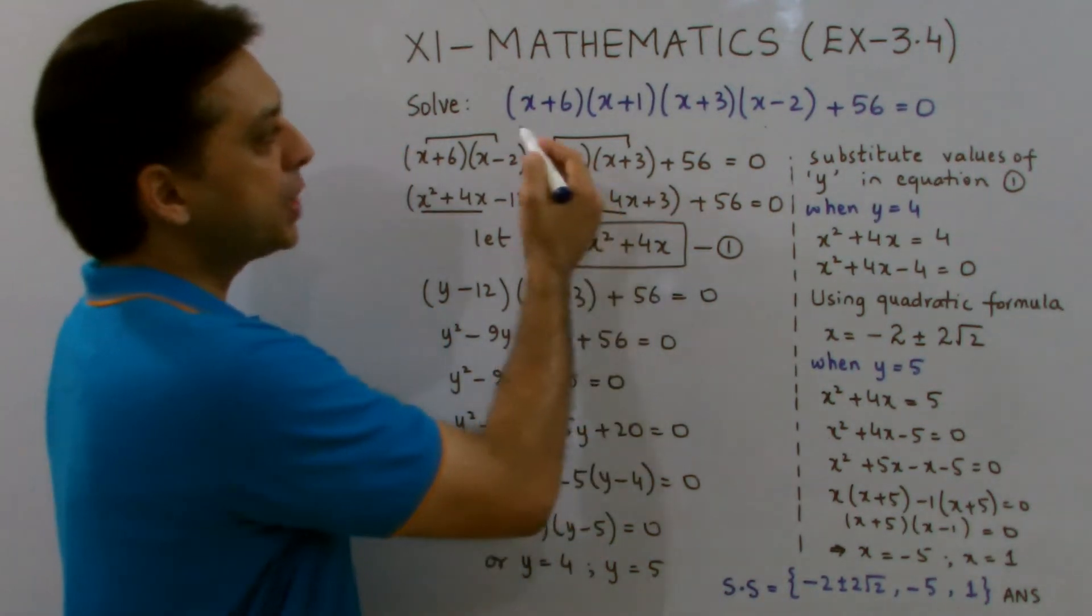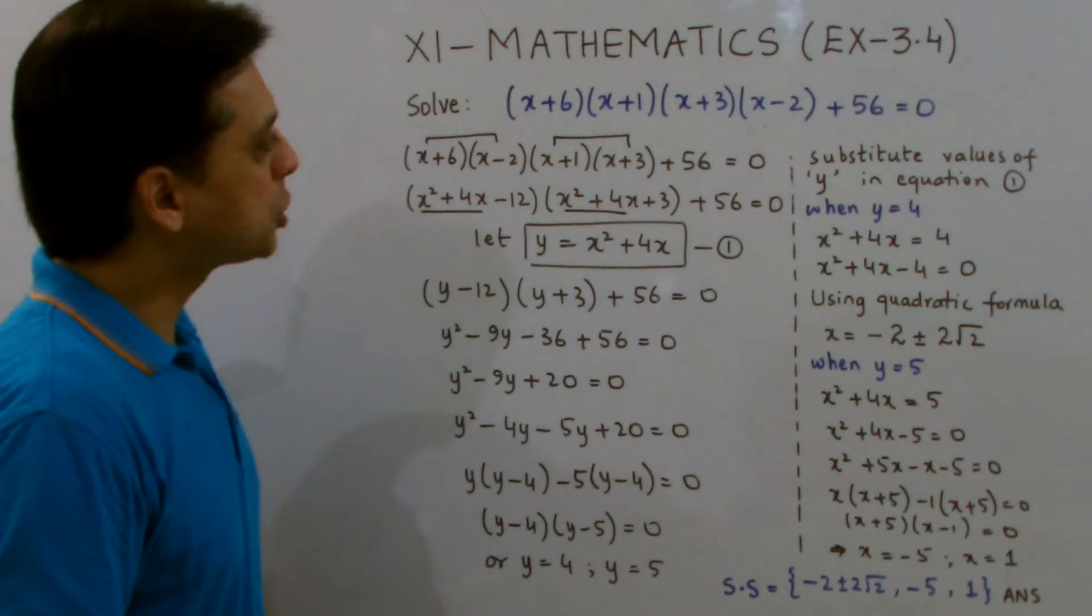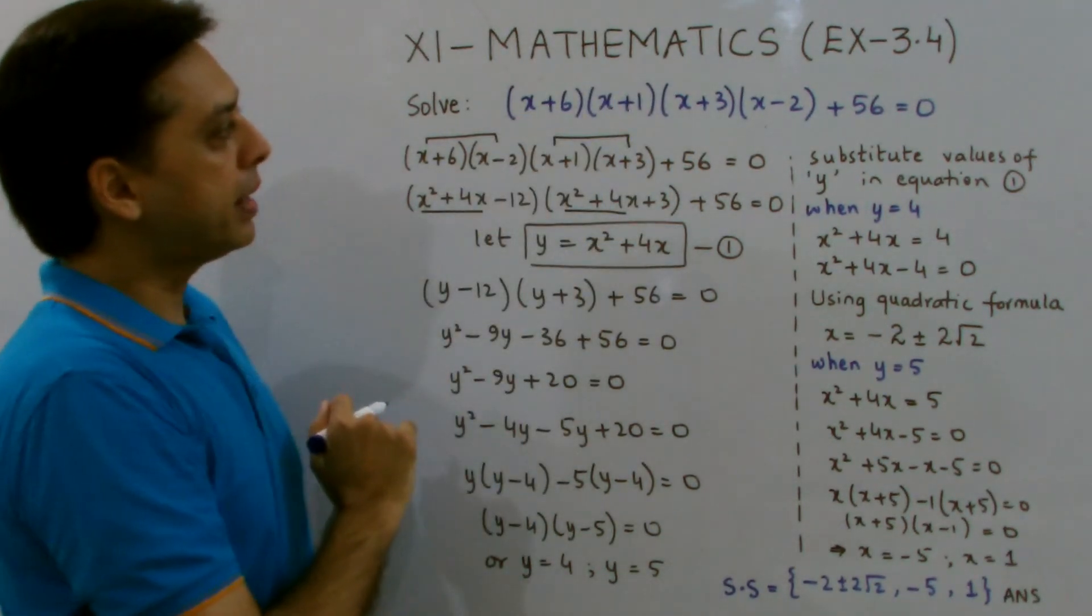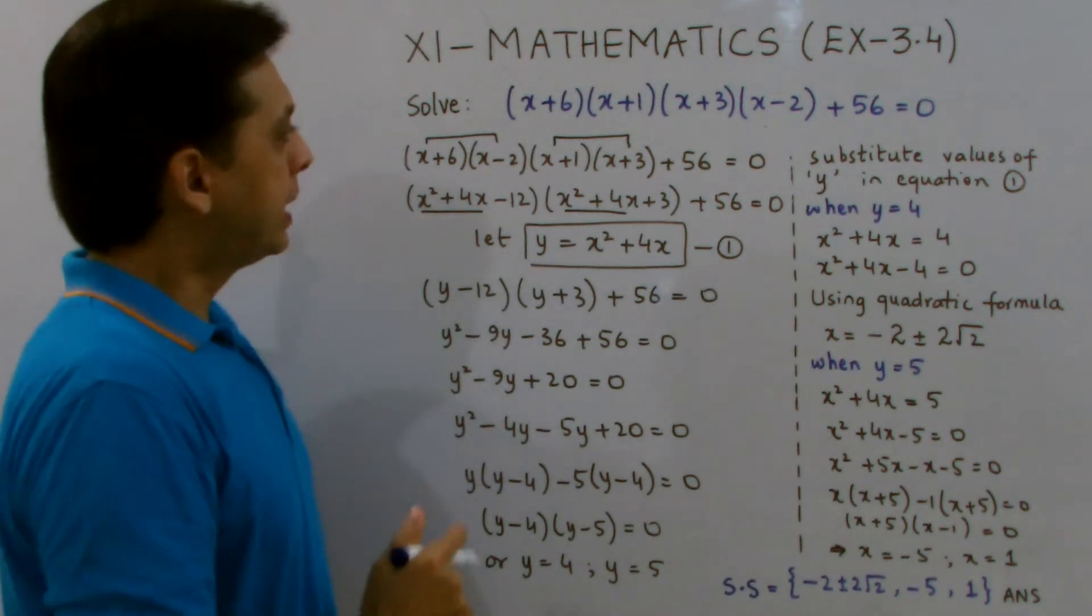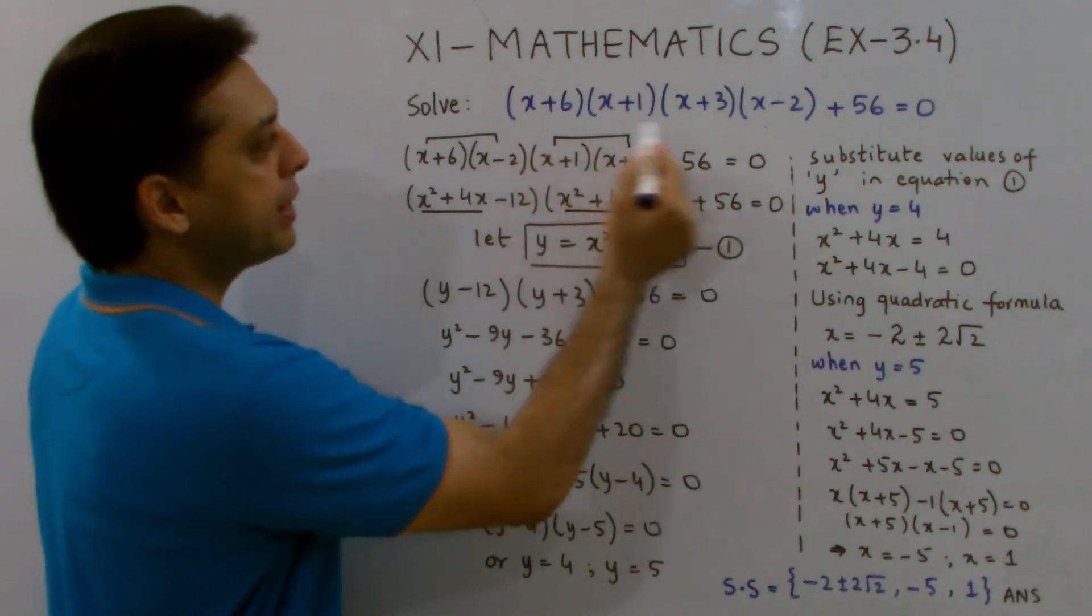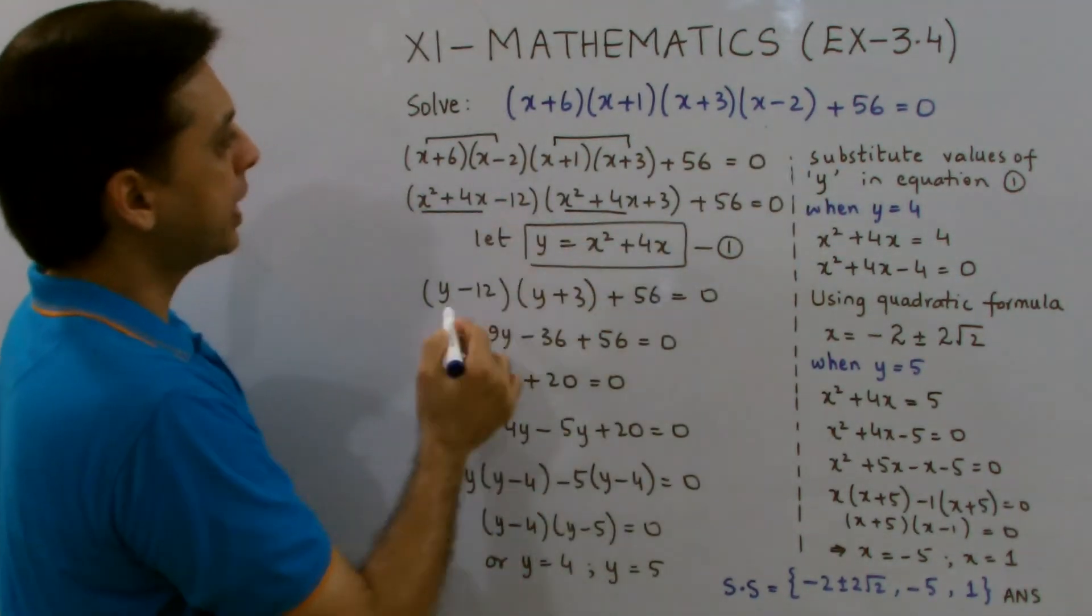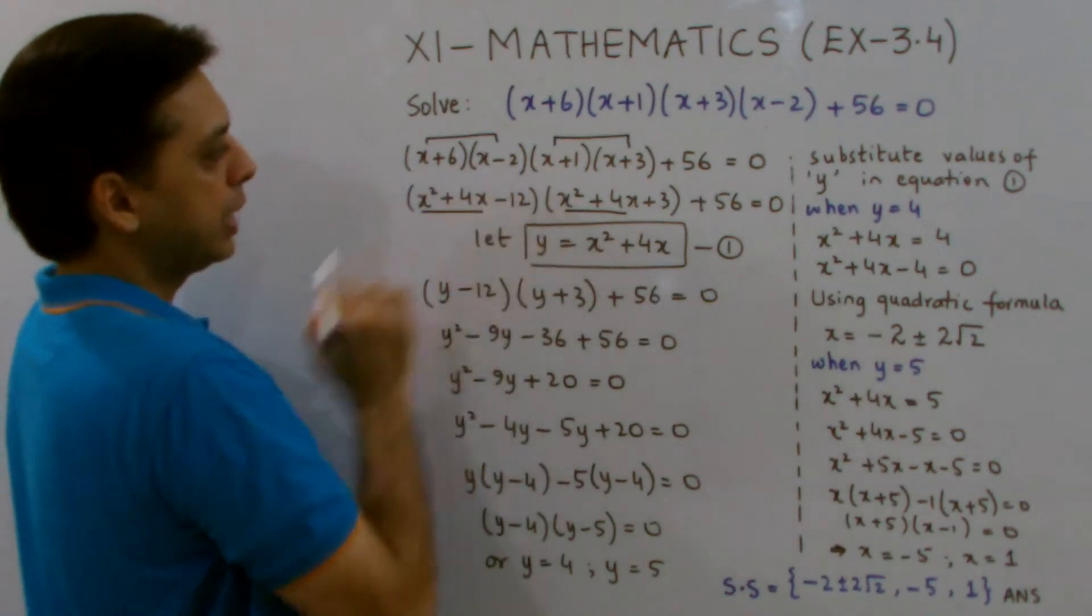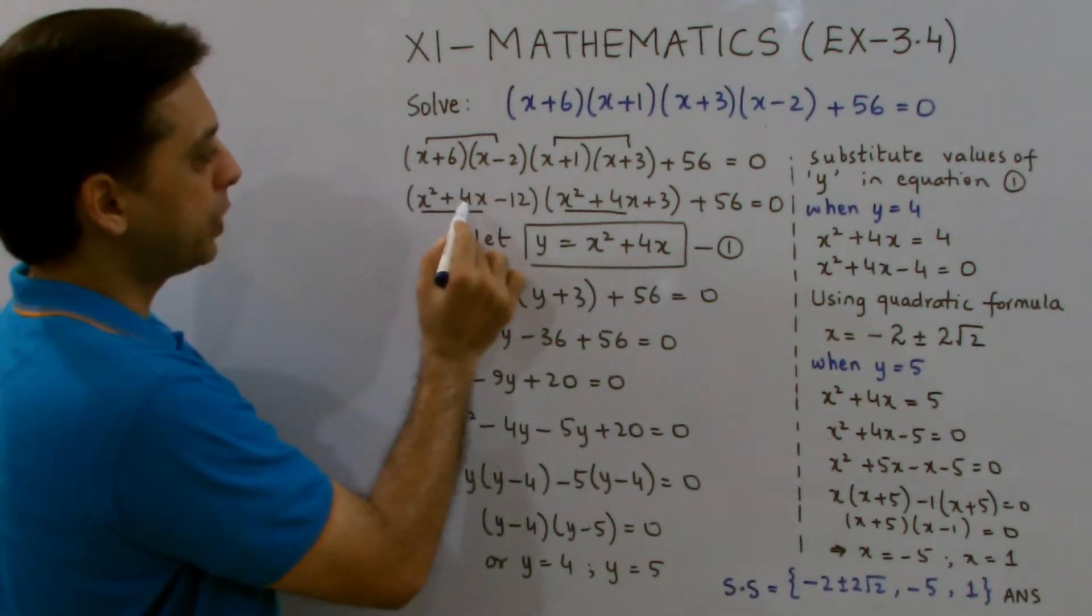Now, whenever you are given an equation like this, you have to make sure that when you multiply the brackets in pairs, the terms in x squared and x must be the same. What exactly do I mean? Just have a look. I just rearranged these four brackets in such a way that when I multiply x plus 6 and x minus 2, I get x squared plus 4x minus 12.